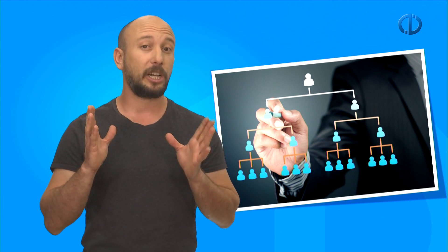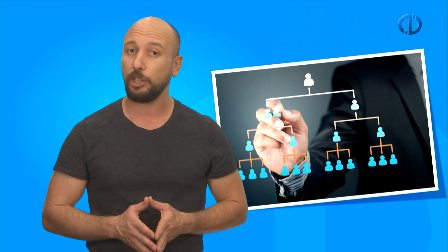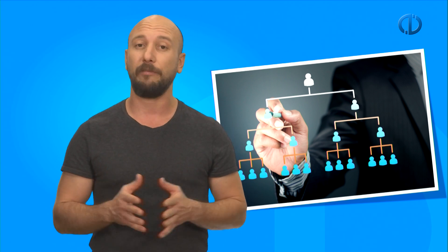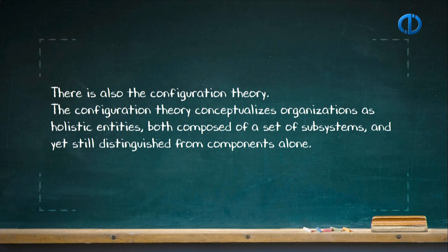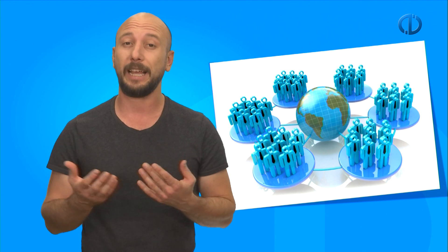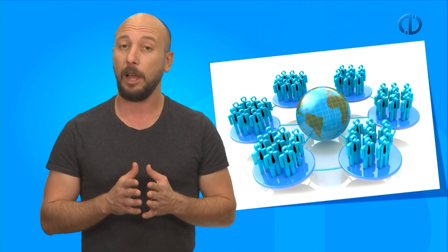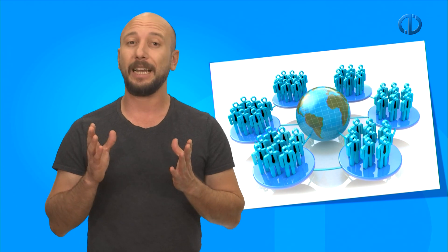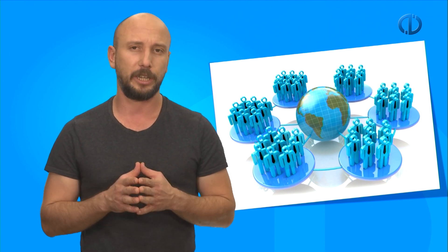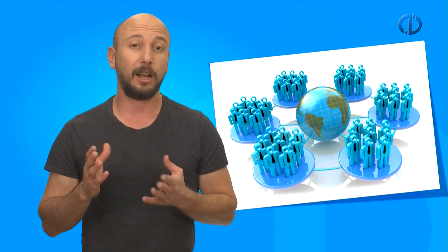Studies have found that there is a connection between size, formalized structure, and performance, and this connection is the most robust for companies operating in relatively stable environments. There is also the Configuration Theory. The Configuration Theory conceptualizes organizations as holistic entities, both composed of a set of subsystems and yet still distinguished from components alone. Subcomponents are related to each other in ways that yield a coherent whole. These wholes are often referred to as ideal types, archetypes, or modes. A configuration implies a multi-dimensional combination of work contingencies, design, and performance elements that commonly occur together.